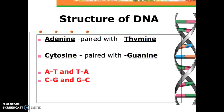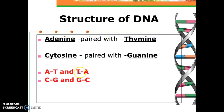We have four bases in DNA. Adenine pairs with thymine — A pairs with T. Cytosine pairs with guanine — C pairs with G. You just have to know the letters: A and T, C and G. If you forget, it's apples and trees, cars in the garage.